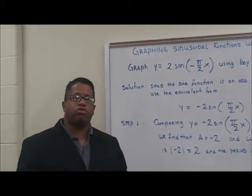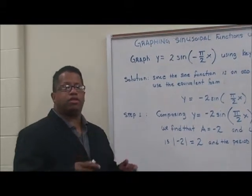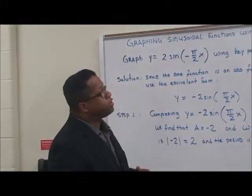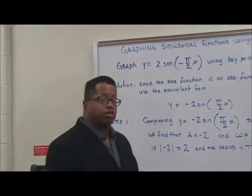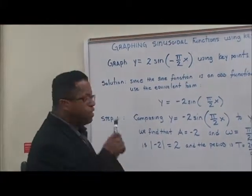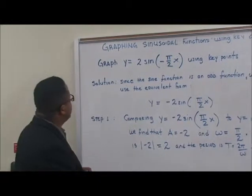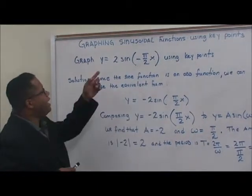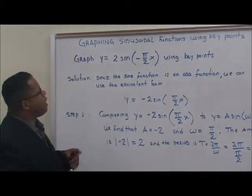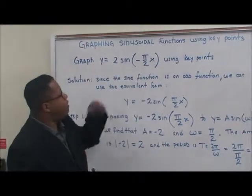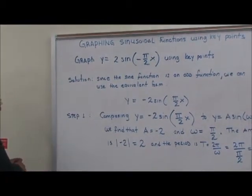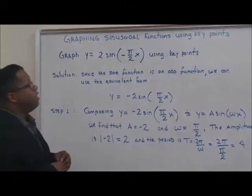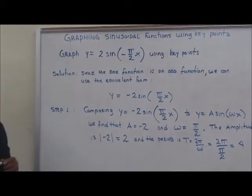Hello, and welcome to this segment of graphing sinusoidal functions using key points. Let's do a problem: graphing y equals 2 times the sine of negative pi over 2 times x. We want to use the key points to graph this function.